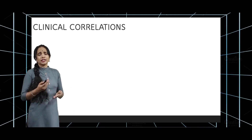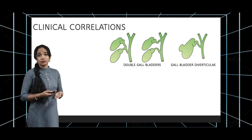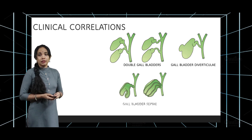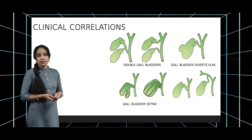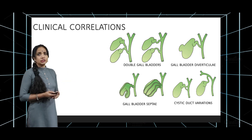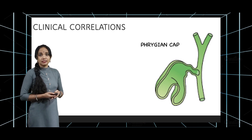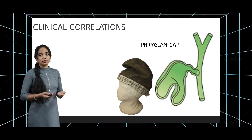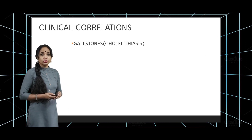The gallbladder is notorious for developmental anomalies. You can get a double gallbladder, diverticular projections from the walls, or septate gallbladder which may be incomplete or complete, as well as cystic duct variations. Among all these, the most common is the Phrygian cap anomaly, a form of septate gallbladder named for its similarity to the Phrygian cap.